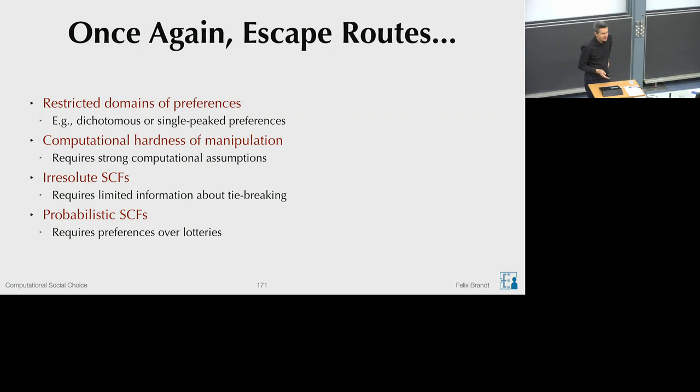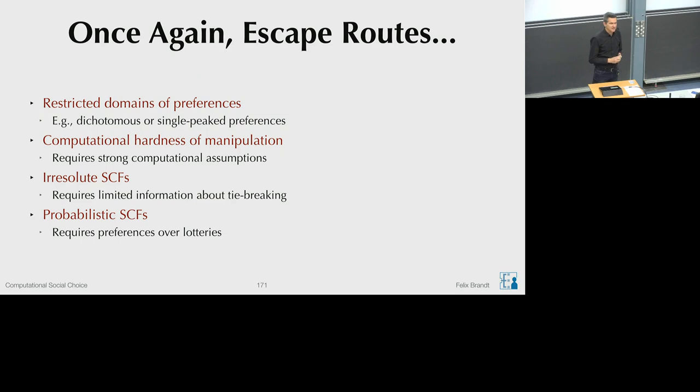In today's lecture I am covering three of these approaches. The first one—restricted domain of preferences—to circumvent these negative results, we've basically already discussed last time. Just as we did for the Arrovian impossibilities, we can consider restricted domains such as single-peaked preferences or dichotomous preferences. For instance, approval voting or median voting satisfy strategy-proofness and also participation, as we have seen. So restricting the domain of preferences is an escape route that all of these negative results basically have in common.